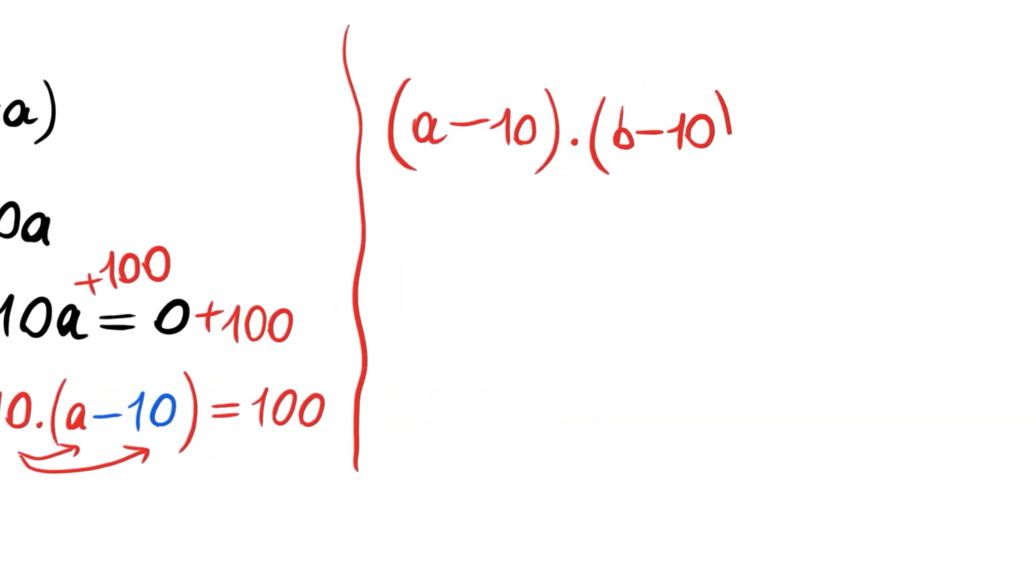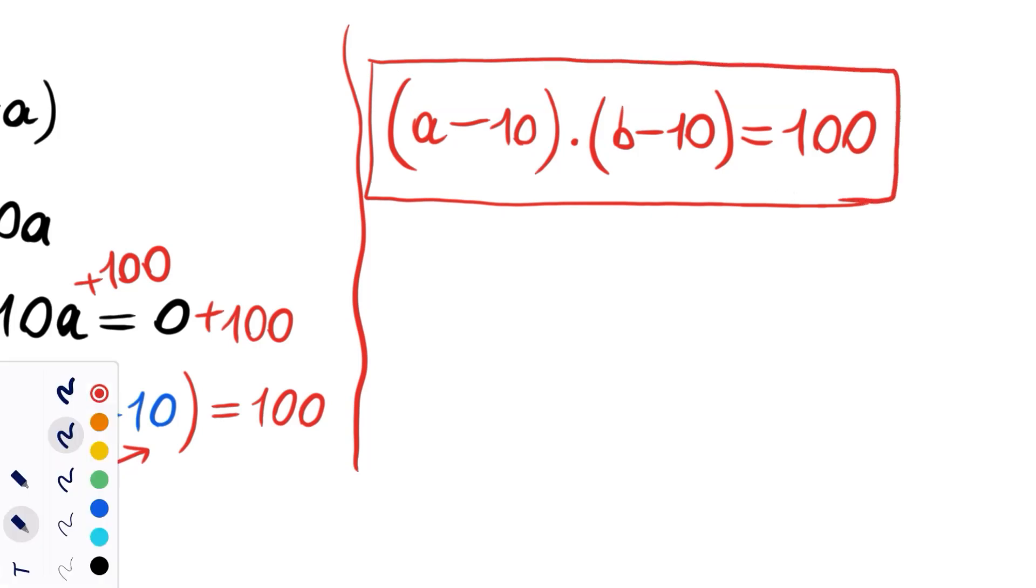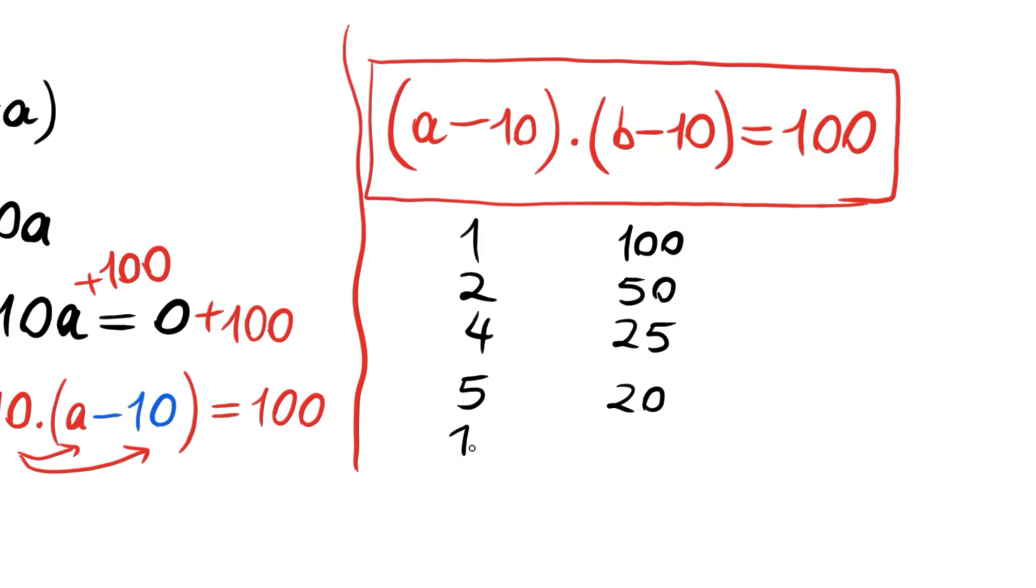And this is the point we stop and try to think about the divisors of 100. These divisors are 1 times 100, 2 times 50, 4 times 25, or 5 times 20, and also 10 times 10.